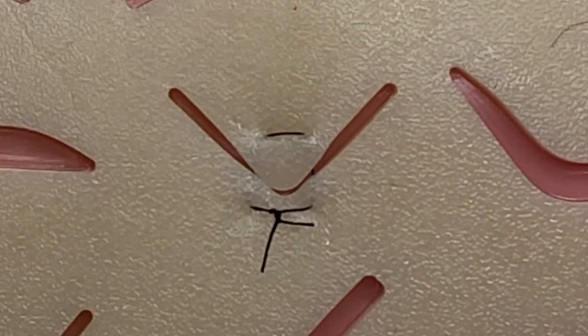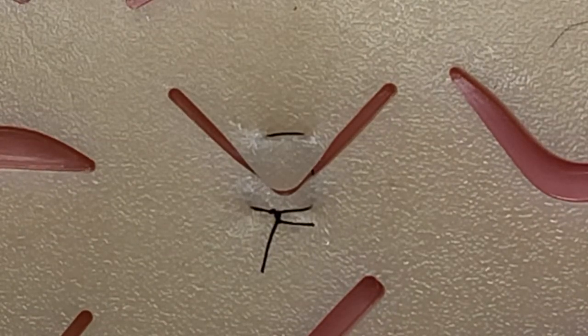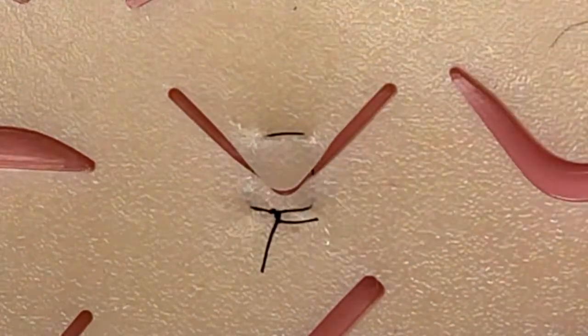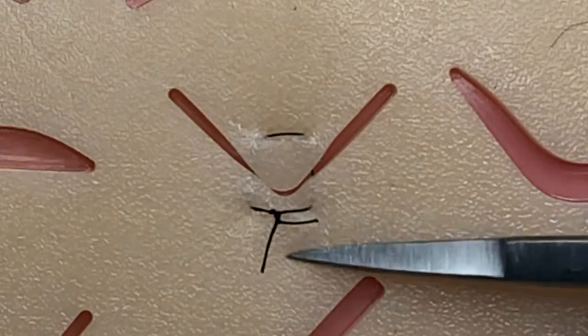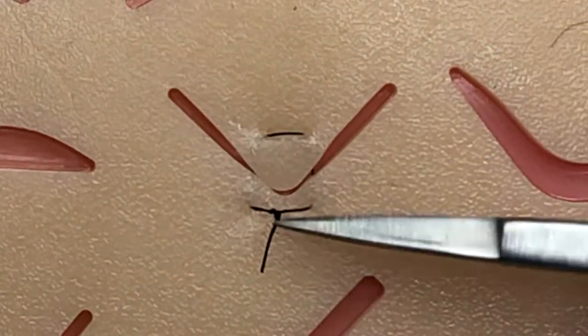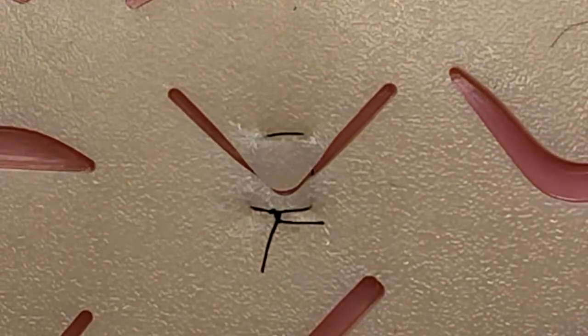All right, there you go, folks. So we have two ways to approach the Y-shaped laceration: one with a single suture across the apex, and another with the horizontal mattress.